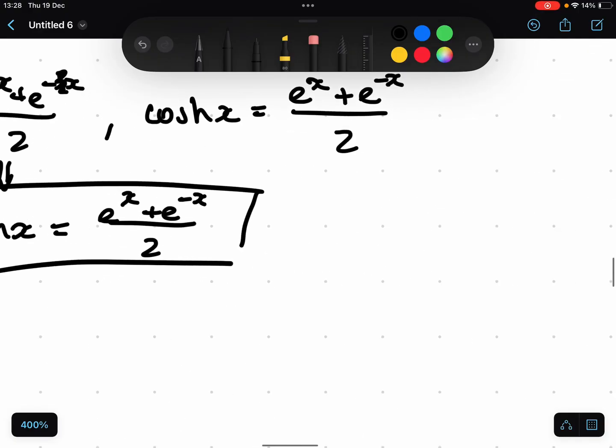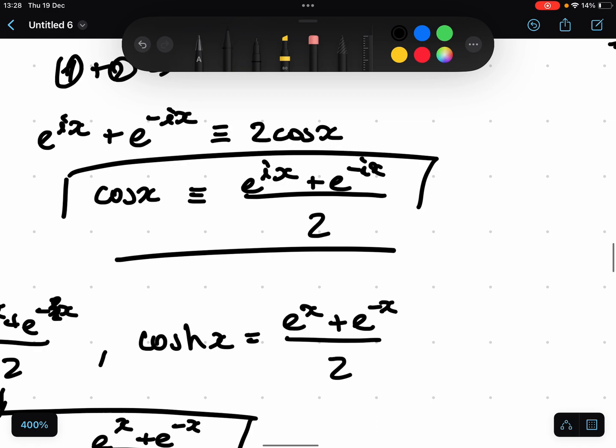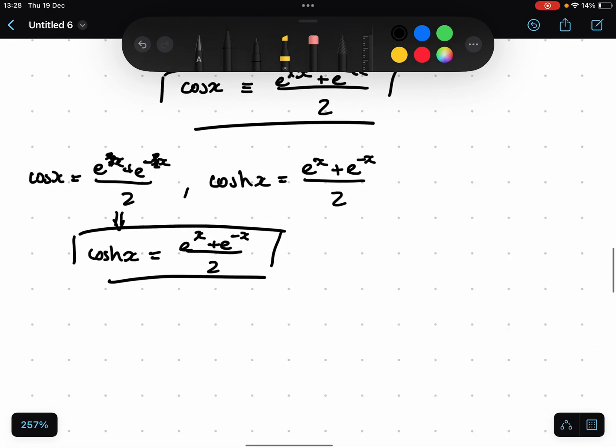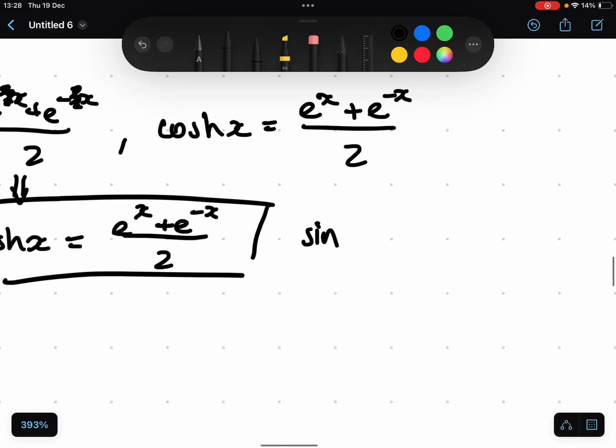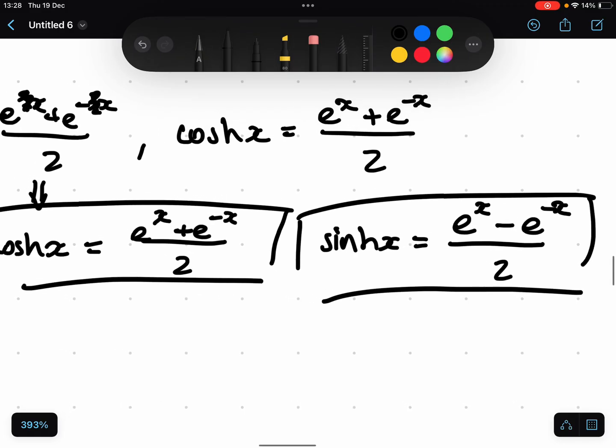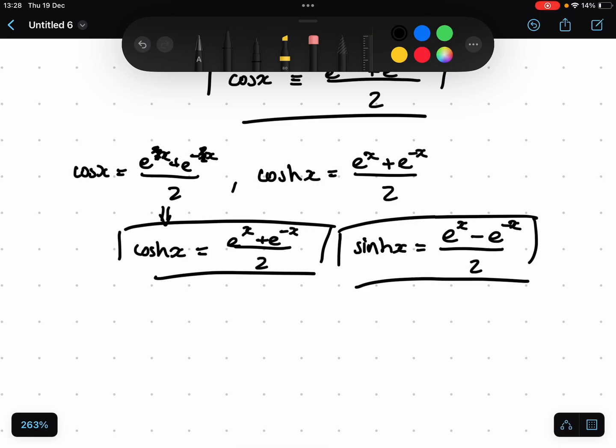which is equal to e to the IX plus e to the negative X over 2. So, that sort of gives a little resemblance. And you do the same thing with sine if you solve this. I'm not going to do it, because I think it's pretty self-explanatory. If you just minus the equation, so plus in the equations, the cosine should cancel out. And you'll get sine H, sine of X is equal to e to the X minus e to the negative X over 2. Okay?